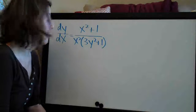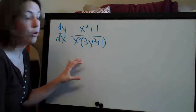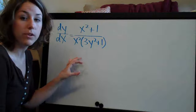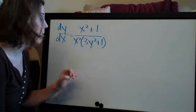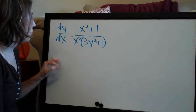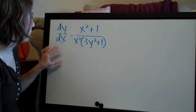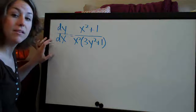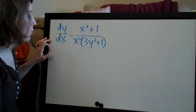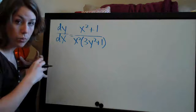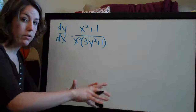The first step whenever we have a separable equation problem is to separate the variables. We have y's and x's in this equation, and we need to get the y's on one side and the x's on the other side.